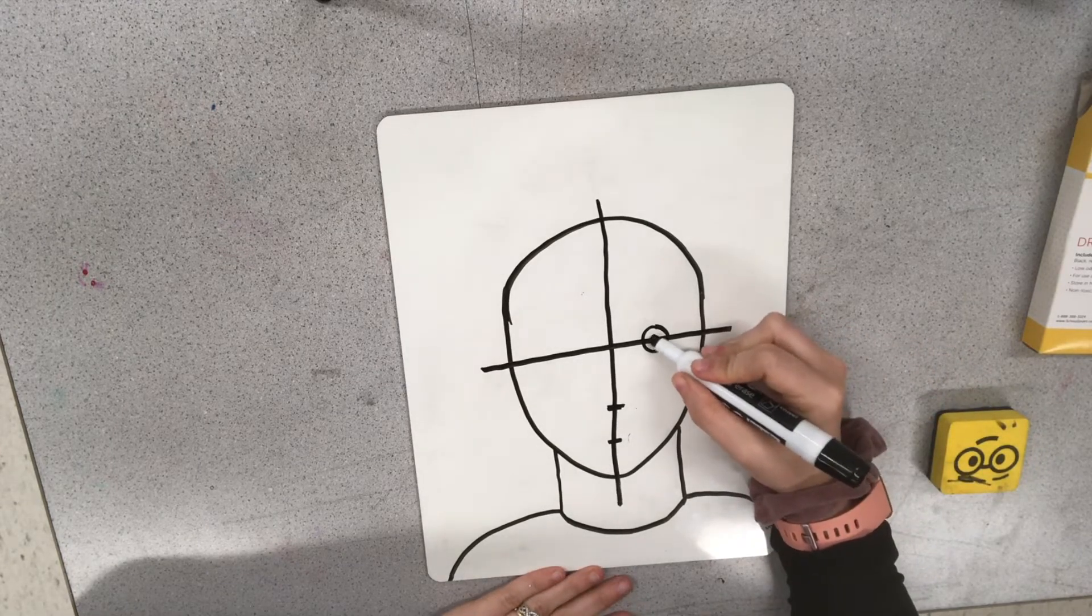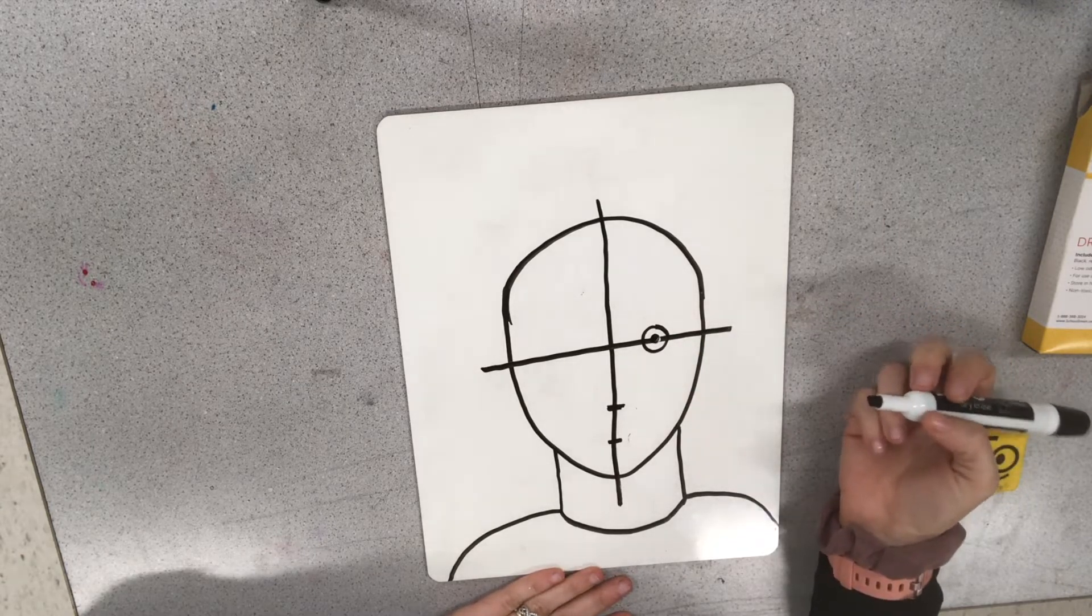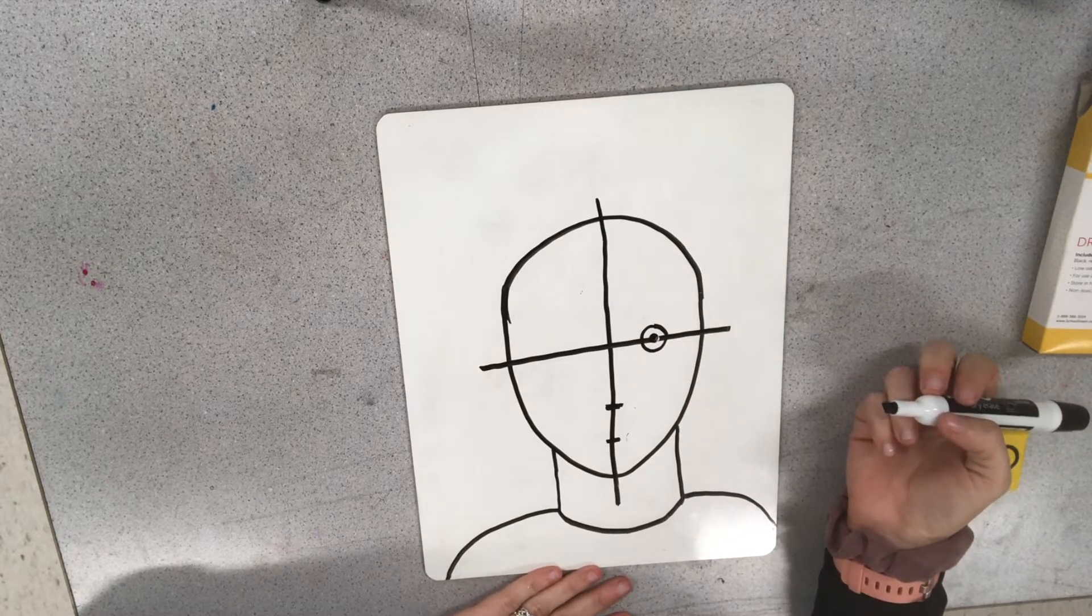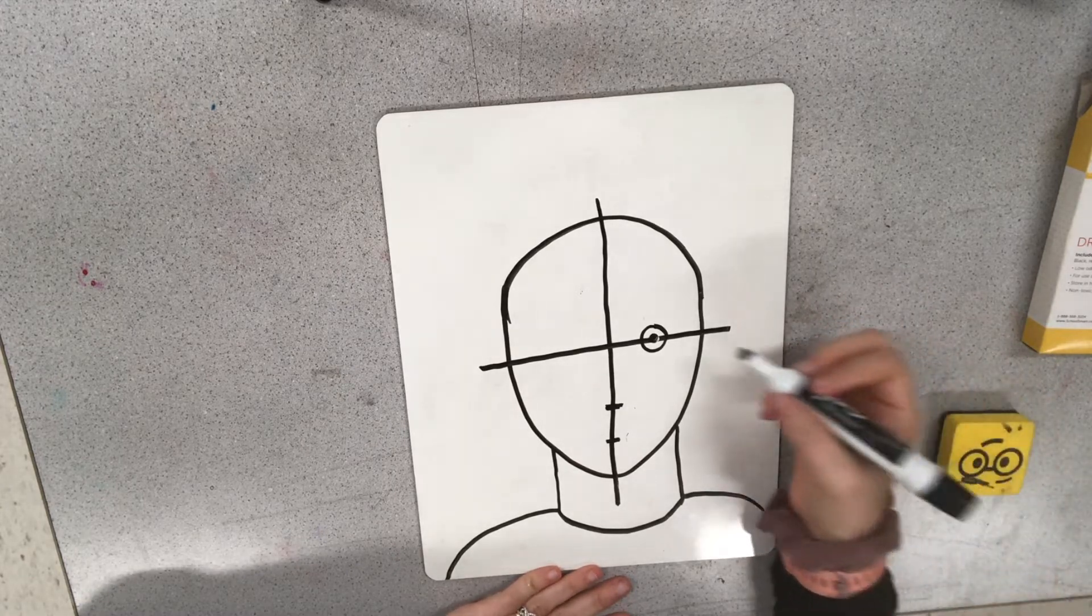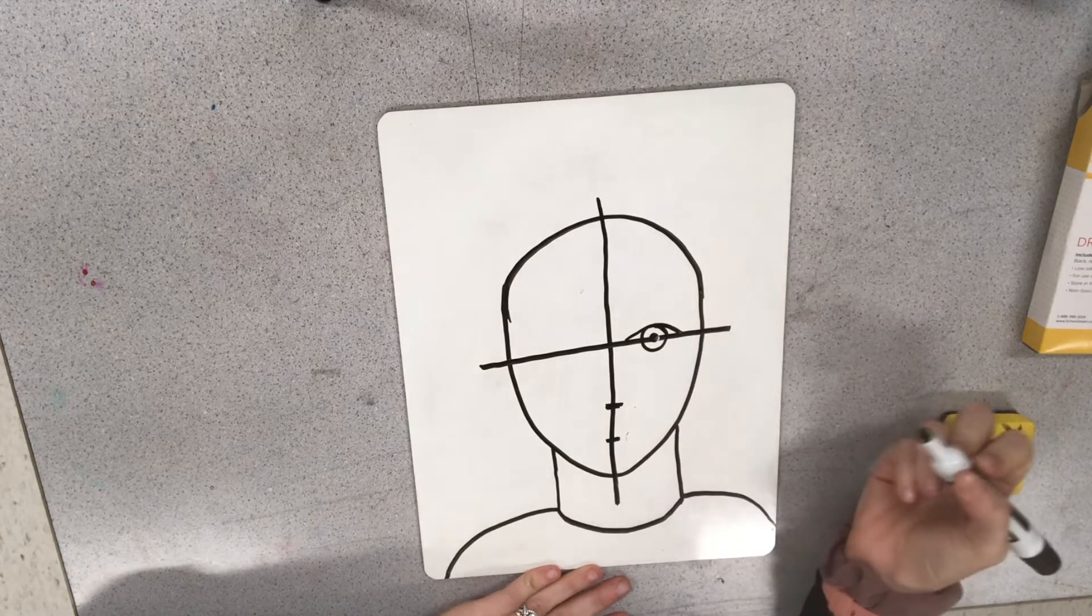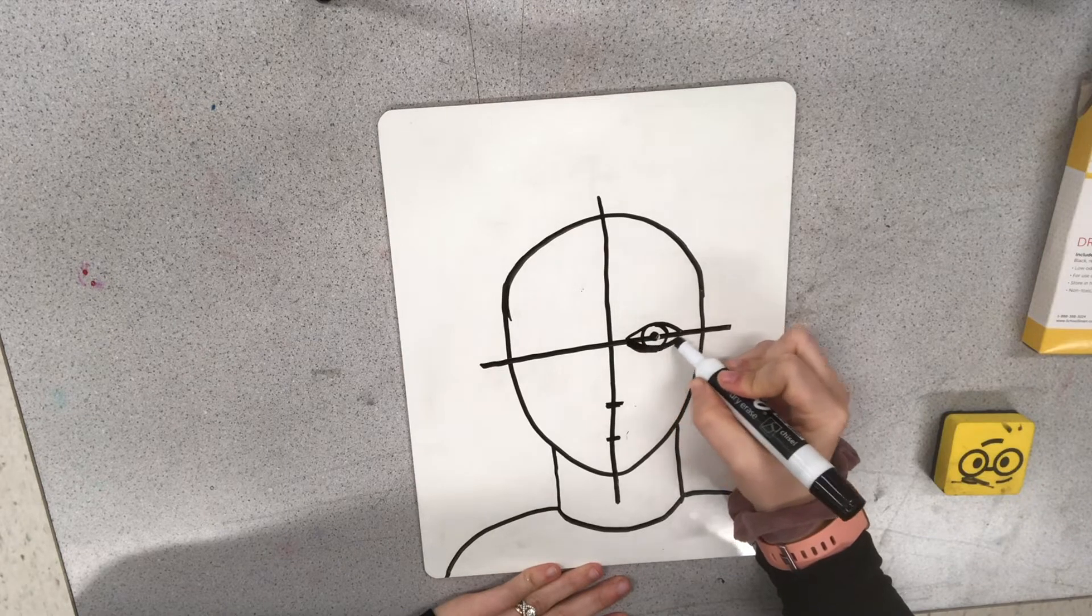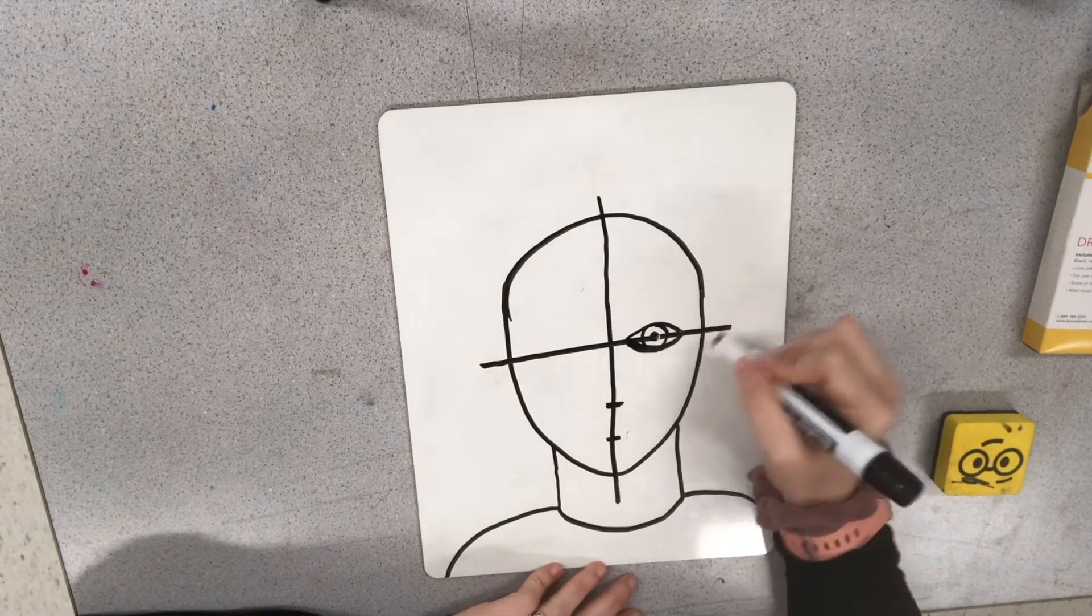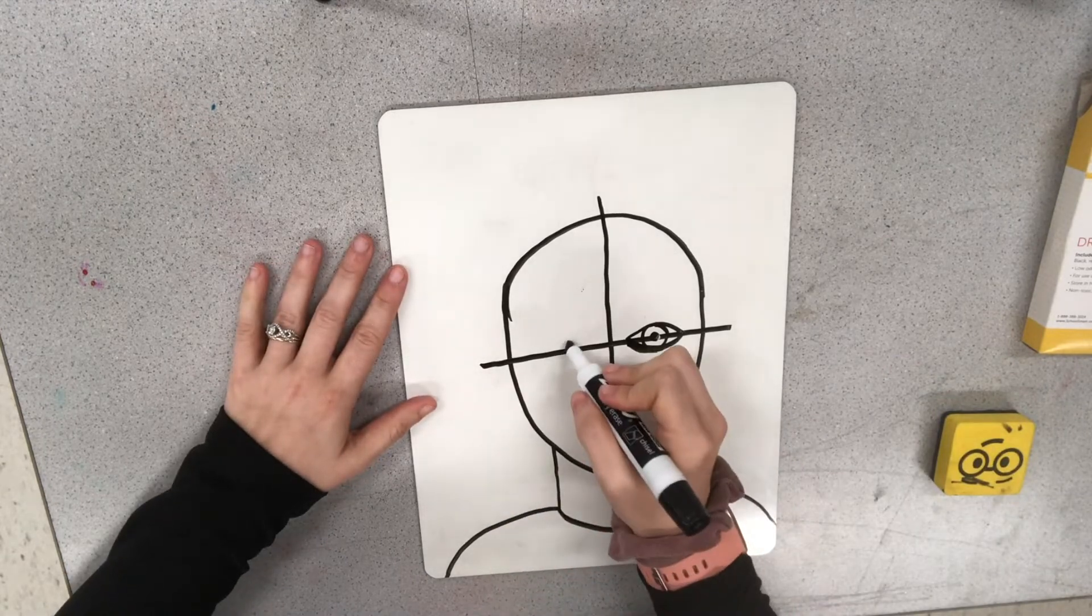Then I'm going to add the pupil which is the black dot in the center of our iris. It kind of looks like a doughnut right now. And then I want to add in the white part of our eye. So I'm going to start with a rainbow line, and then underneath that another rainbow or kind of like a smile line because it's upside down.